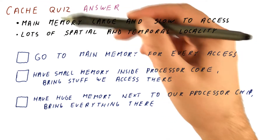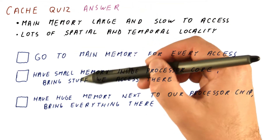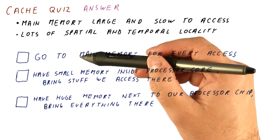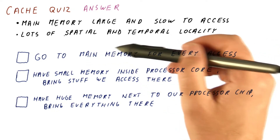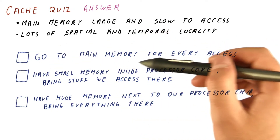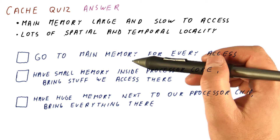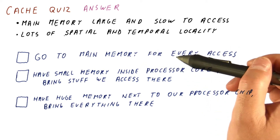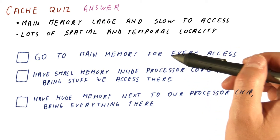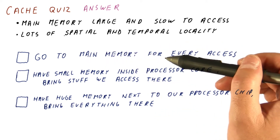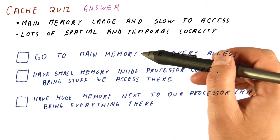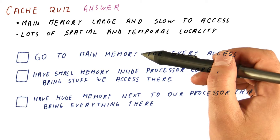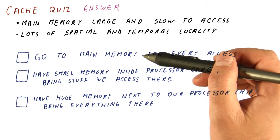Let's look at the answer to our cache quiz. These three are very similar to the options we have when we want to get books from a library. This is like going to the library every time we need to look up something, and clearly we don't want to do that. Main memory is just like the library — slow and very large — so if we go to the main memory every time, we're spending a lot of time just waiting for it to respond with data.